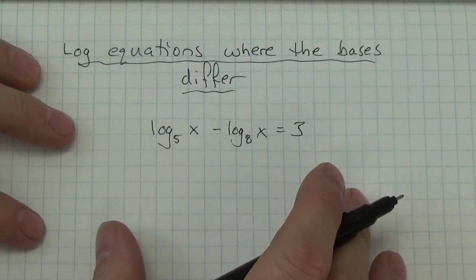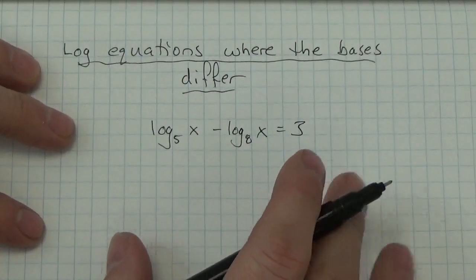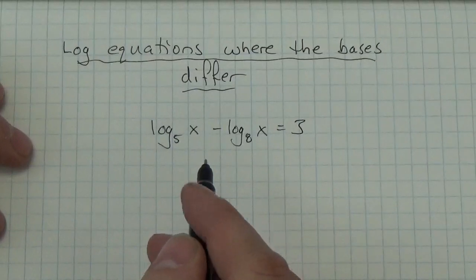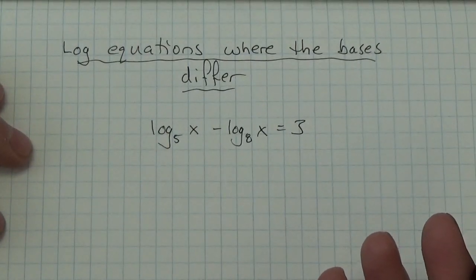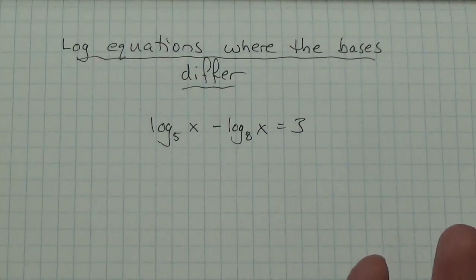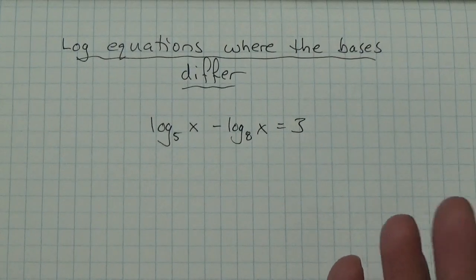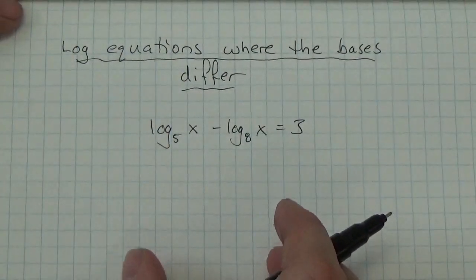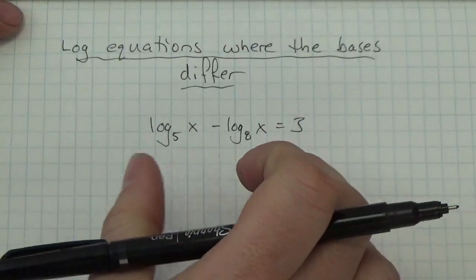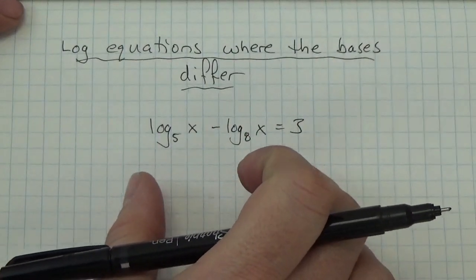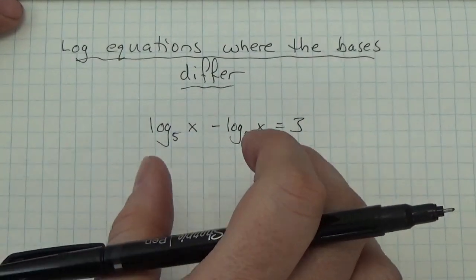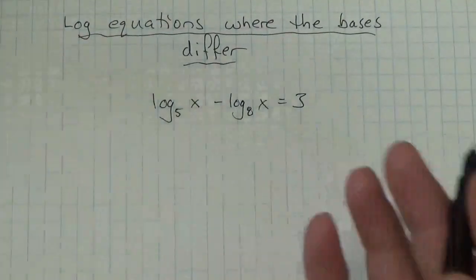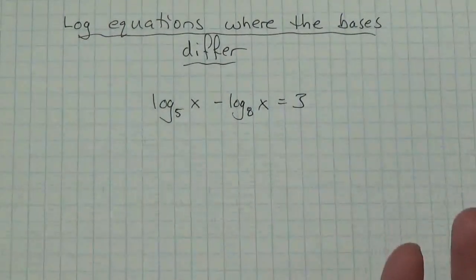Now, I'll be quite honest with you — what I would probably do here is just graph it. I'd go to my calculator, plug it in, graph it, and get a decimal approximation. But that's not what your teacher wants. What your teacher wants is an algebraic approach. So what we're going to do is use the change of base formula to change these to the same base. I could change them both to log base 10,